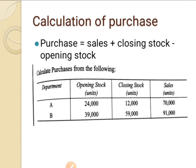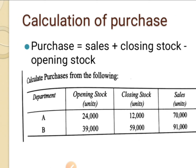Calculate purchase from the following — department A and B — opening stock in units, closing stock in units, and sales in units are given. The formula says sales plus closing stock minus opening stock. So sales 70,000 plus closing stock 12,000 minus opening stock 24,000 — that will give you purchase.